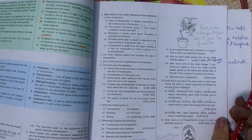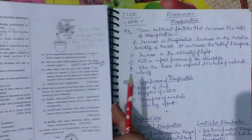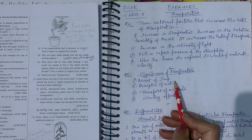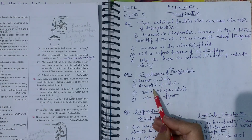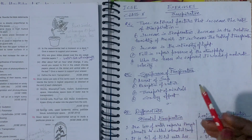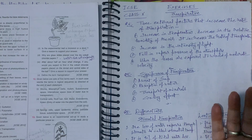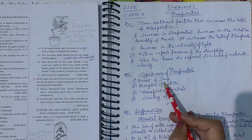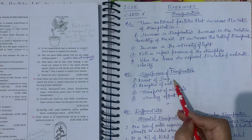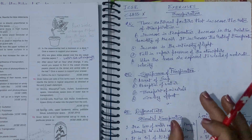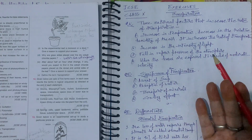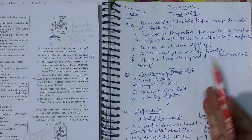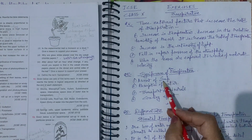Give a brief account of the significance of transpiration. Significance: ascent of sap and absorption of water — the more water transpired, the more water absorbed and the more ascent of sap. Sap is water with minerals dissolved in it. The more transpiration, the more transport of minerals to different parts of the plant.